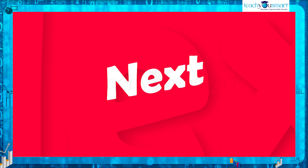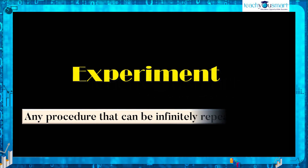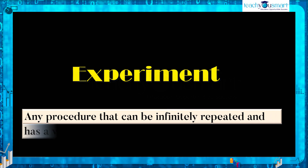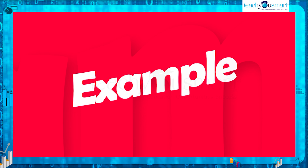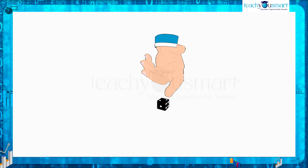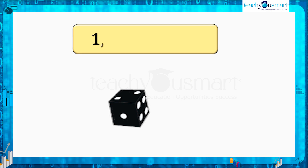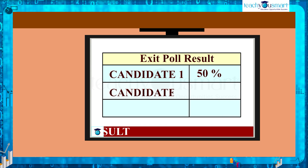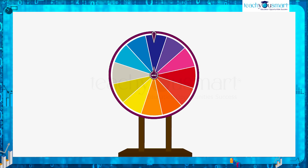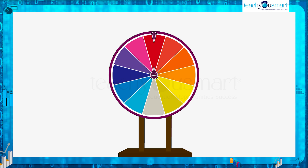Next, we will discuss some terms related to probability. The first one is experiment: any procedure that can be infinitely repeated and has a well-defined set of possible outcomes is called an experiment. For example, while rolling a die we get the numbers one, two, three, four, five, and six as outcomes — so rolling a die and collecting the outcomes is an experiment. The process of conducting an exit poll is an experiment, and rotating a spin wheel and pointing to a particular color is also an example of an experiment.